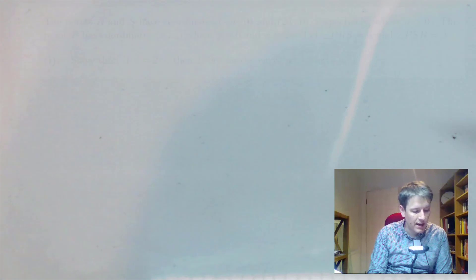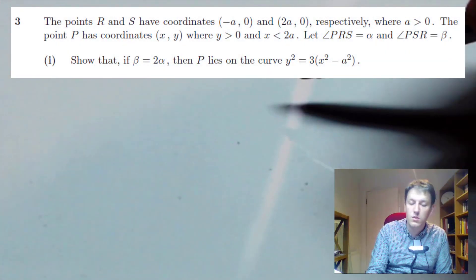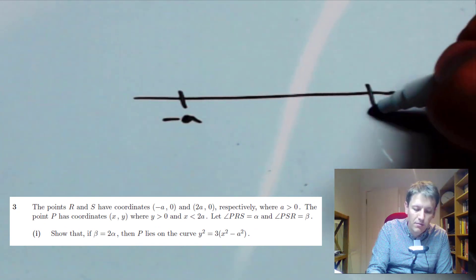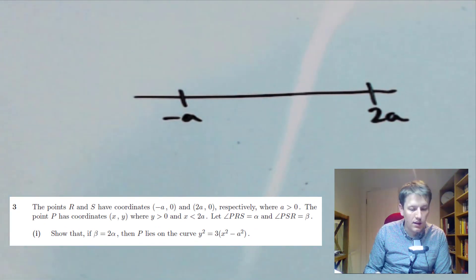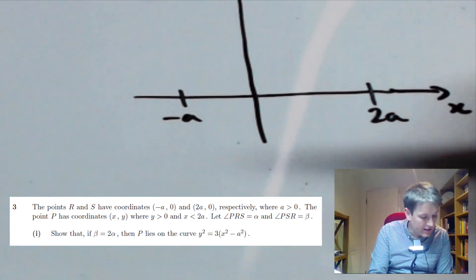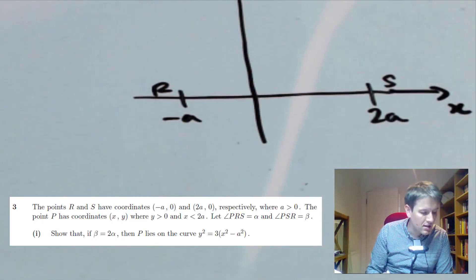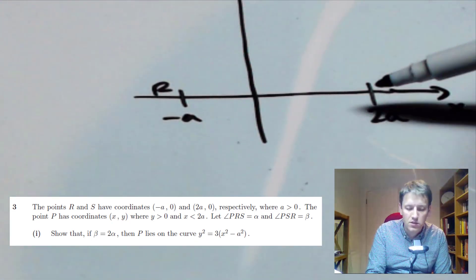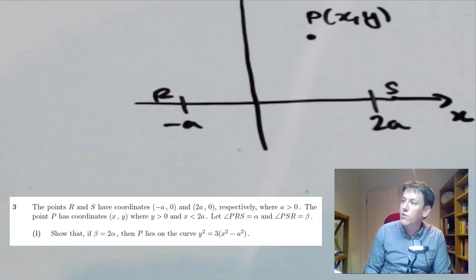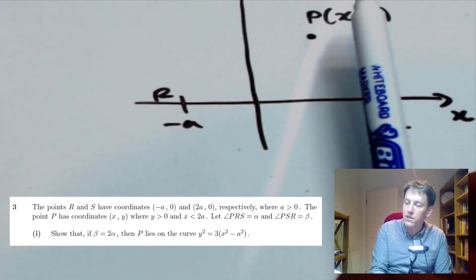We're told in this question that we have points R and S with coordinates (−a, 0) and (2a, 0). Let's put those onto our diagram — one is at −a and the other is at 2a, here on the x-axis with y-coordinate zero. Let's put the y-axis in here as well. The point P has coordinates (x, y) where y is positive and x is smaller than 2a, so all we know is that P is somewhere up here.